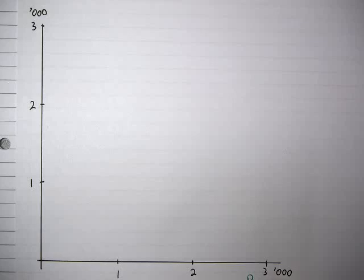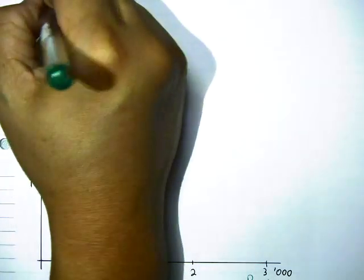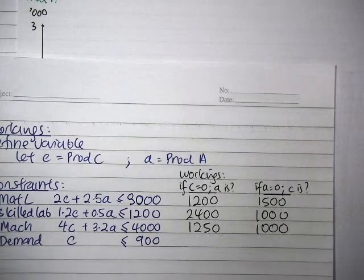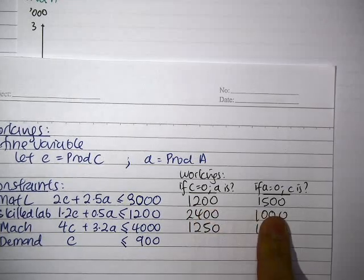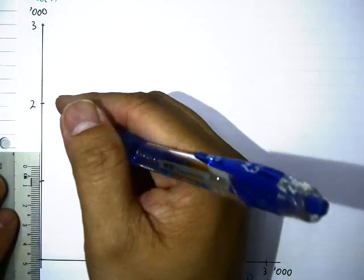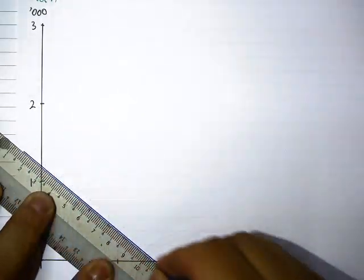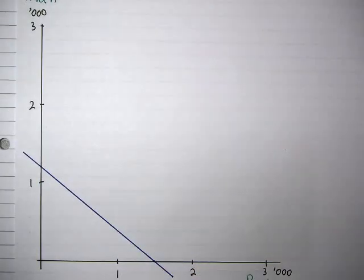You're going to have Product C and Product A on both the axes. Draw the first line. The first line for Material L is you're going to have A at 1200, C at 1500. So 1500 will be here, and 1200 will be 0.8 centimeters. That's your line for Material L where 2C plus 2.5A does not exceed 3000.